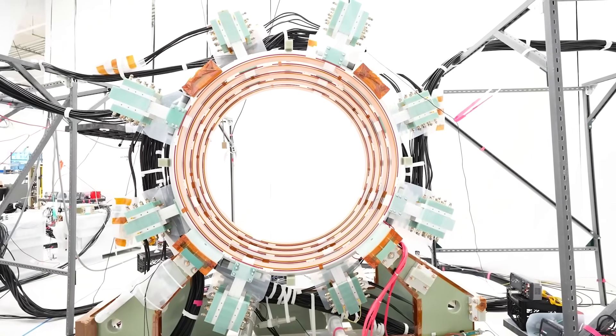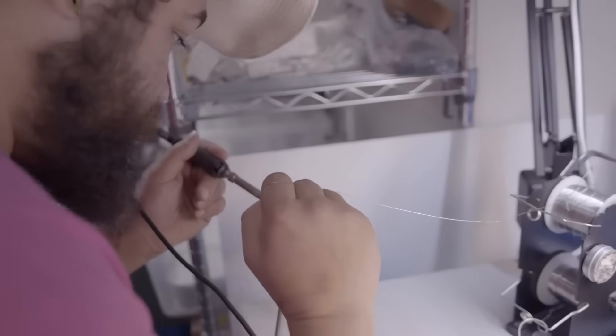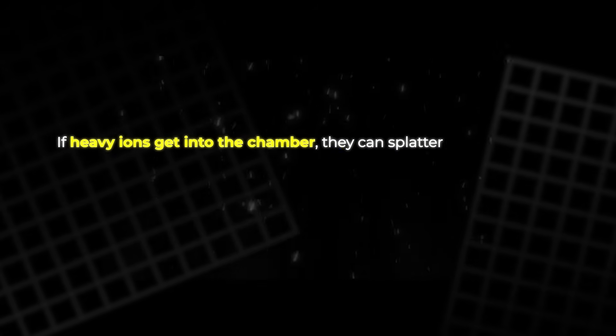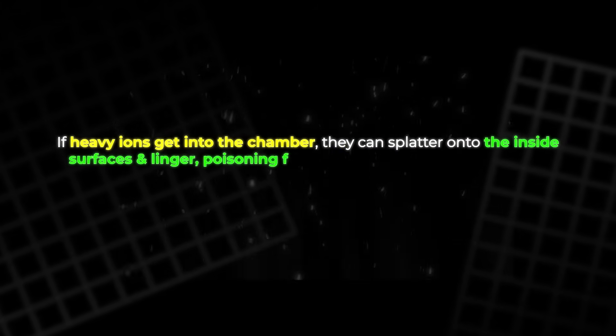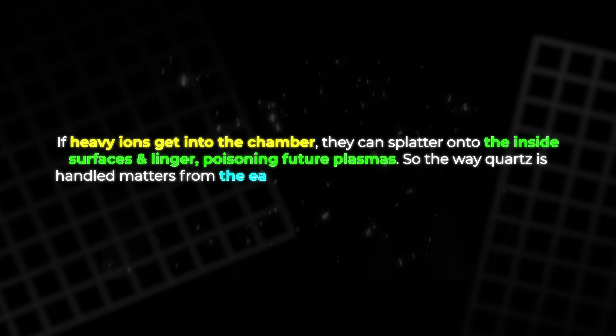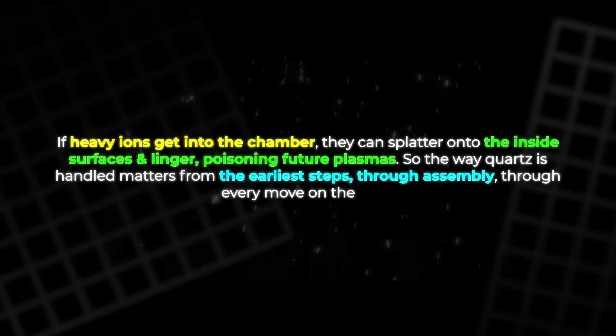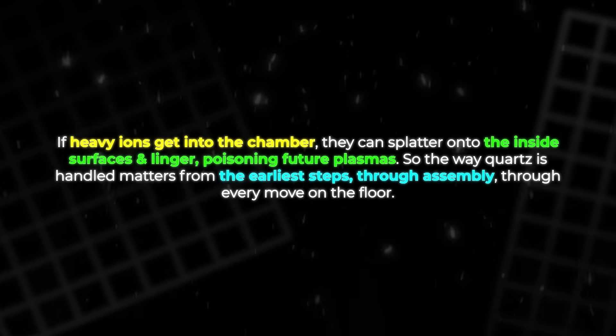Then came seals. Helion has to develop in-house seals that are structural, vacuum-tight, and tough enough for the plasma environment. Cleanliness is not just about dust, it is about the atomic number. If heavy ions get into the chamber, they can splatter onto the inside surfaces and linger, poisoning future plasmas. So the way quartz is handled matters from the earliest steps, through assembly, through every move on the floor.